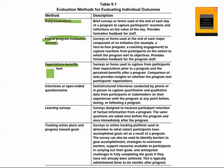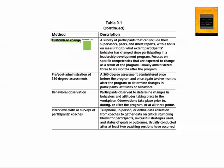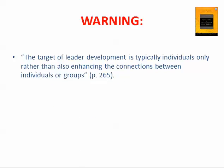Individual outcome methods include expectations, benefits, and comparisons — asking how this compared to what participants expected. You might use interviews or open-ended questionnaires for freeform responses, learning surveys, tracking action plans and progress toward goals, customized change surveys, and pre- and post-administration of 360-degree feedback — comparing pre-program feedback to post-program results. Behavioral observation and interviews of coaches are also options, though behavioral observation can be trickier to obtain.